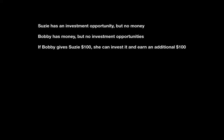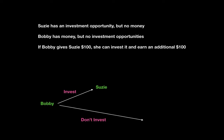To understand why we have contracts, let's consider the following scenario between Susie and Bobby. Susie has an investment opportunity but no money. Bobby has money but no investment opportunities. If Bobby gives Susie $100, she can invest it and earn an additional $100. Bobby can invest — give it to Susie — or choose not to invest. Once Susie has the money, she can cooperate by following through with the investment agreement, or she can appropriate, meaning she takes the money and runs.